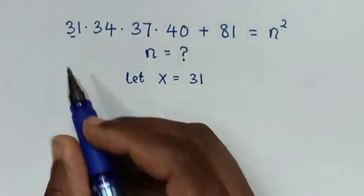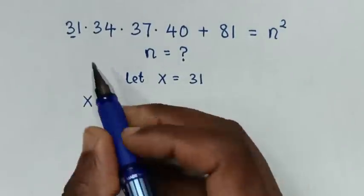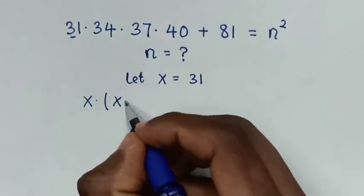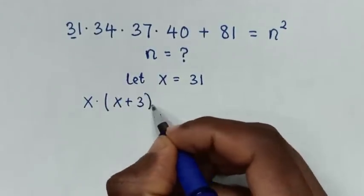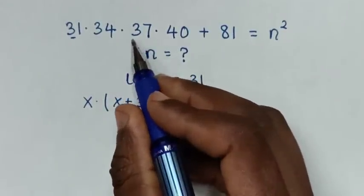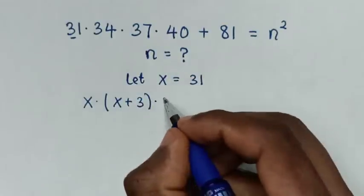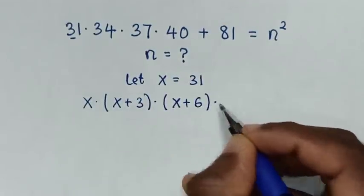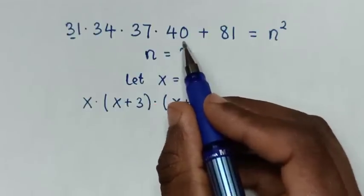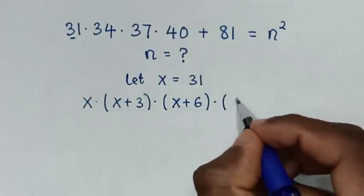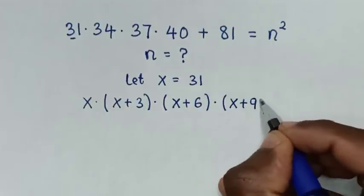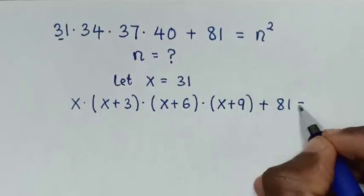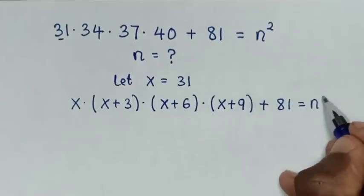Then from here it will be x times (x+3), since 34 is 31 plus 3. Then times (x+6), since 37 is 31 plus 6. Then times (x+9), since 40 is 31 plus 9, then plus 81, equals n squared.